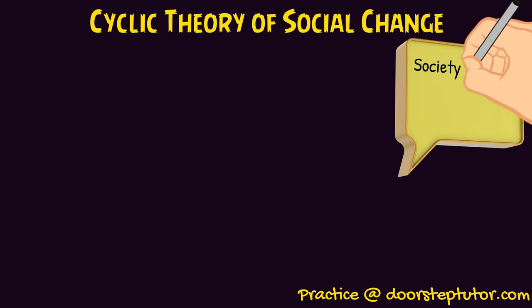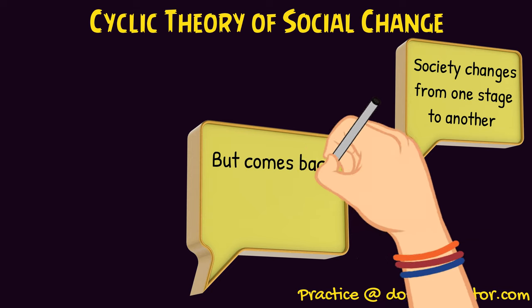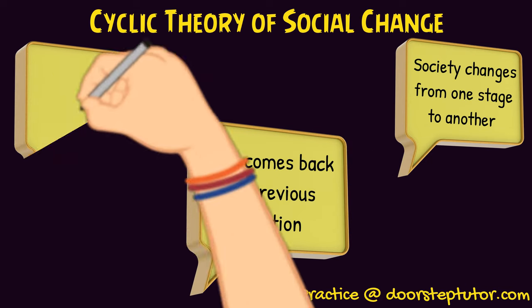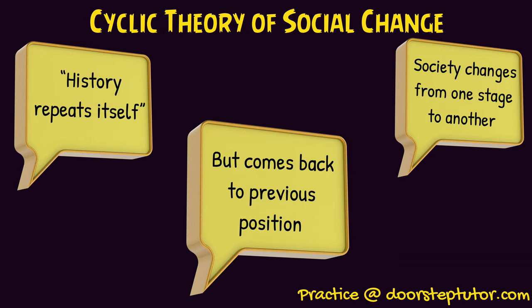The cyclic theory of social change says that society changes from one stage to another. This is very evident because change is inevitable. But what happens is after the change, after it has gone to another stage, it comes back to its previous position. We can compare the cyclic theory of social change to the quote, 'history repeats itself.' You know how fashion keeps on coming back? The polka dots that the actresses used to wear in the 80s and 90s have come back in fashion. This is what happens in cyclic theory also — it comes back.